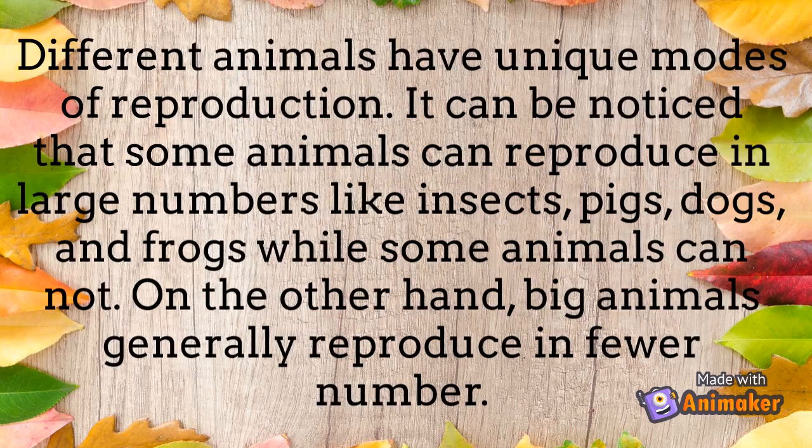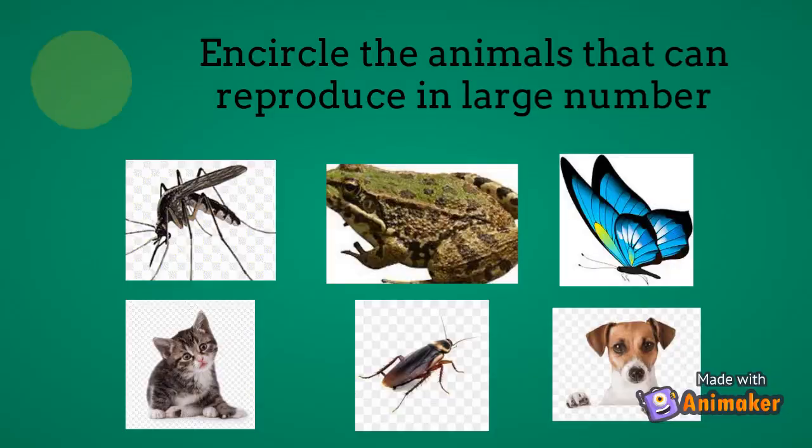Different animals have unique modes of reproduction. It can be noticed that some animals can reproduce in large numbers, like insects, pigs, dogs, and frogs, while some animals cannot. On the other hand, big animals generally reproduce in fewer numbers.